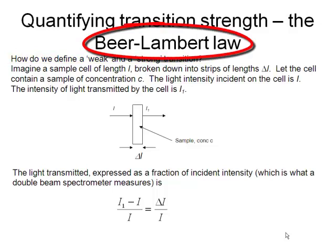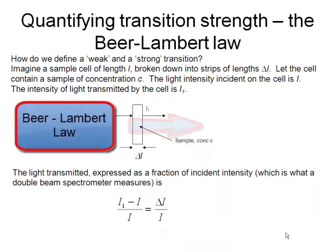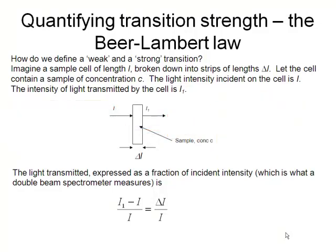We can use the Beer-Lambert law to assess the amount of light transmitted by our sample, and then we can extract from that a constant, which we'll call the molar decadic absorption coefficient, or the extinction coefficient, which characterizes the strength of a transition. And that will allow us to say more precisely what we mean by a weak transition or a strong transition.